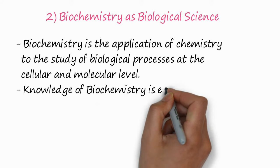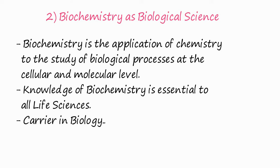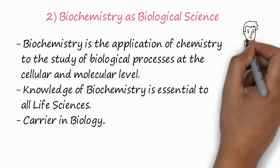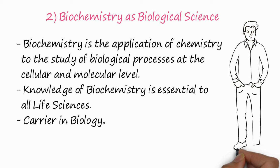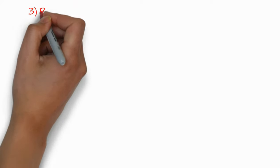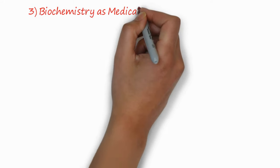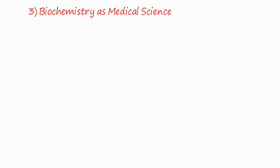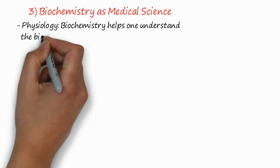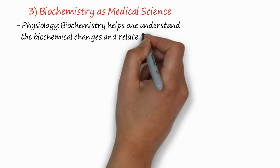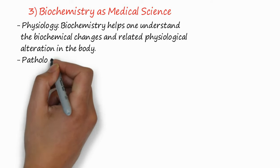The third scope: biochemistry is a medical science. Biochemistry is essential to all life sciences. When you have the knowledge of biochemistry, you can carry this knowledge into the field of biological sciences. Biochemistry is also a core subject in medical sciences; for example, physiology — biochemistry helps to understand the biochemical changes related to physiological alterations in the body.